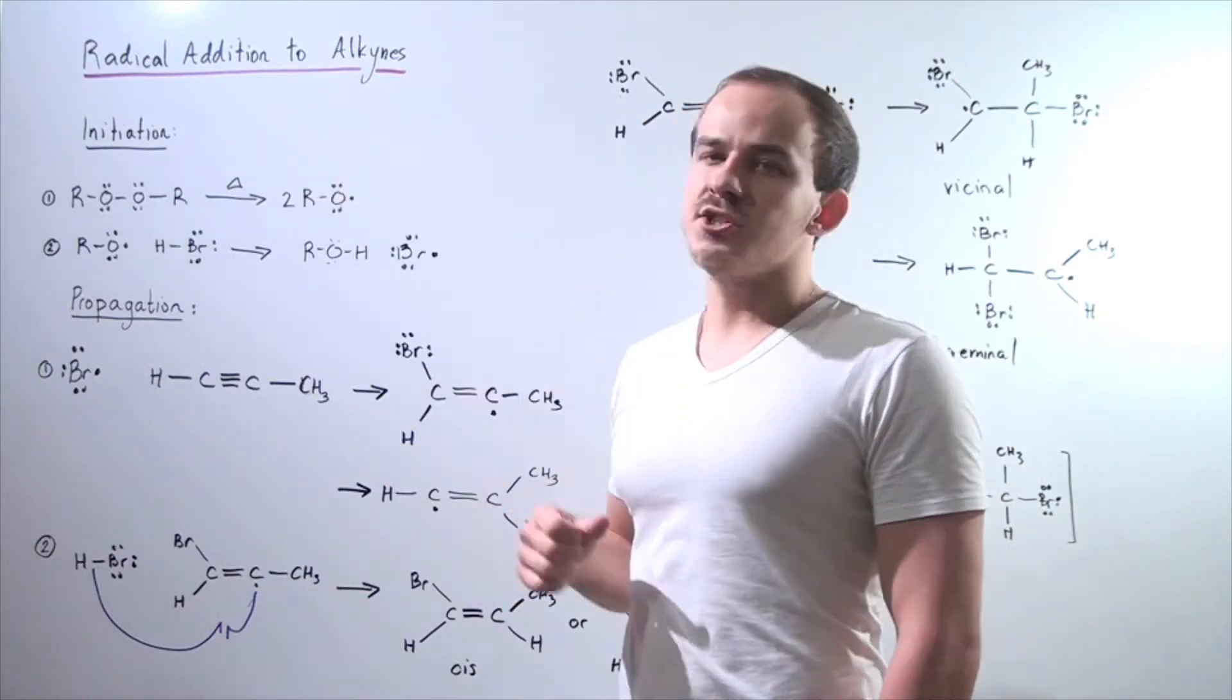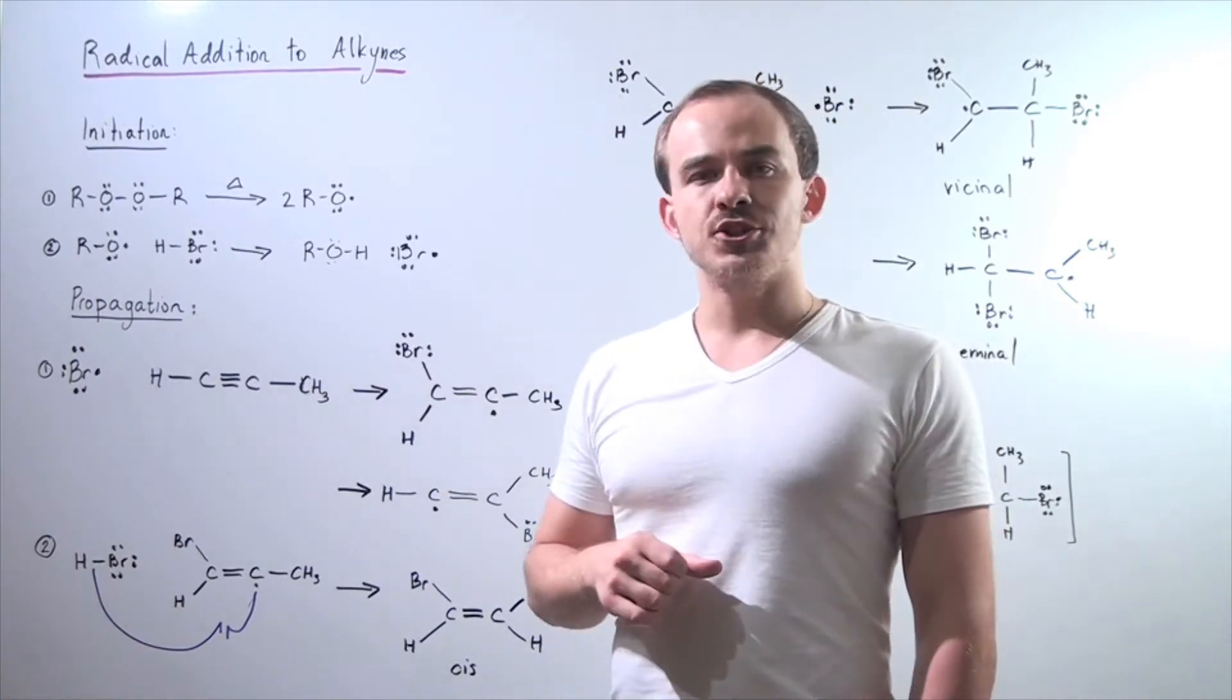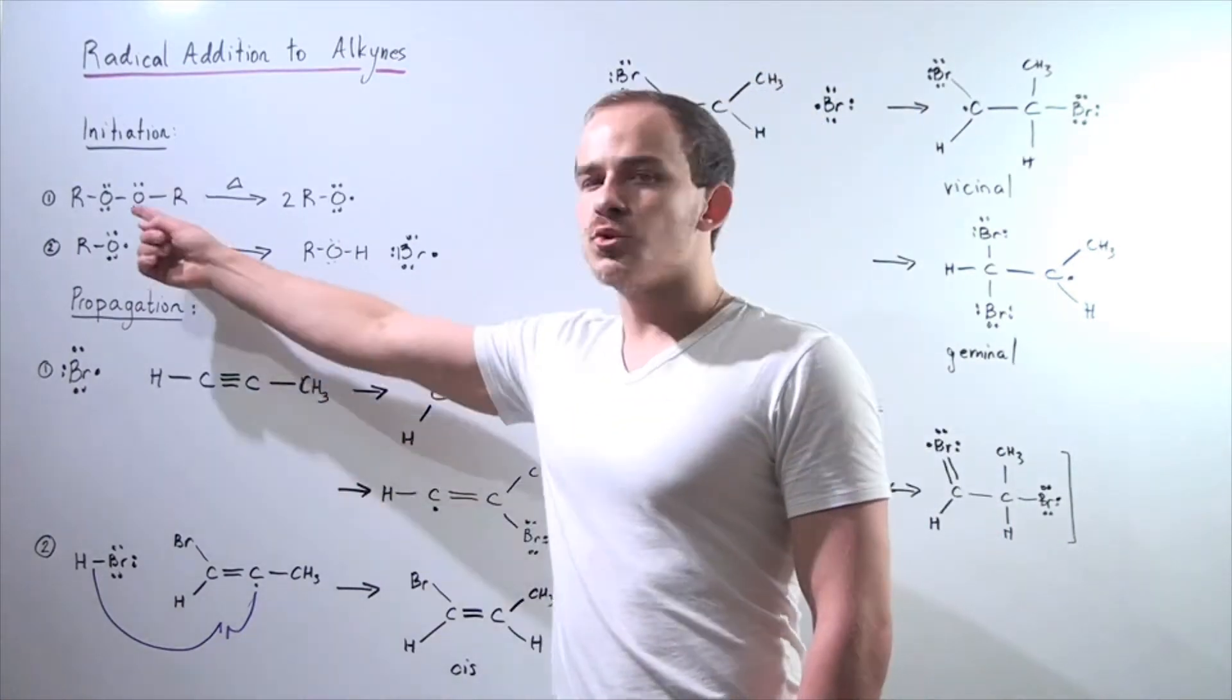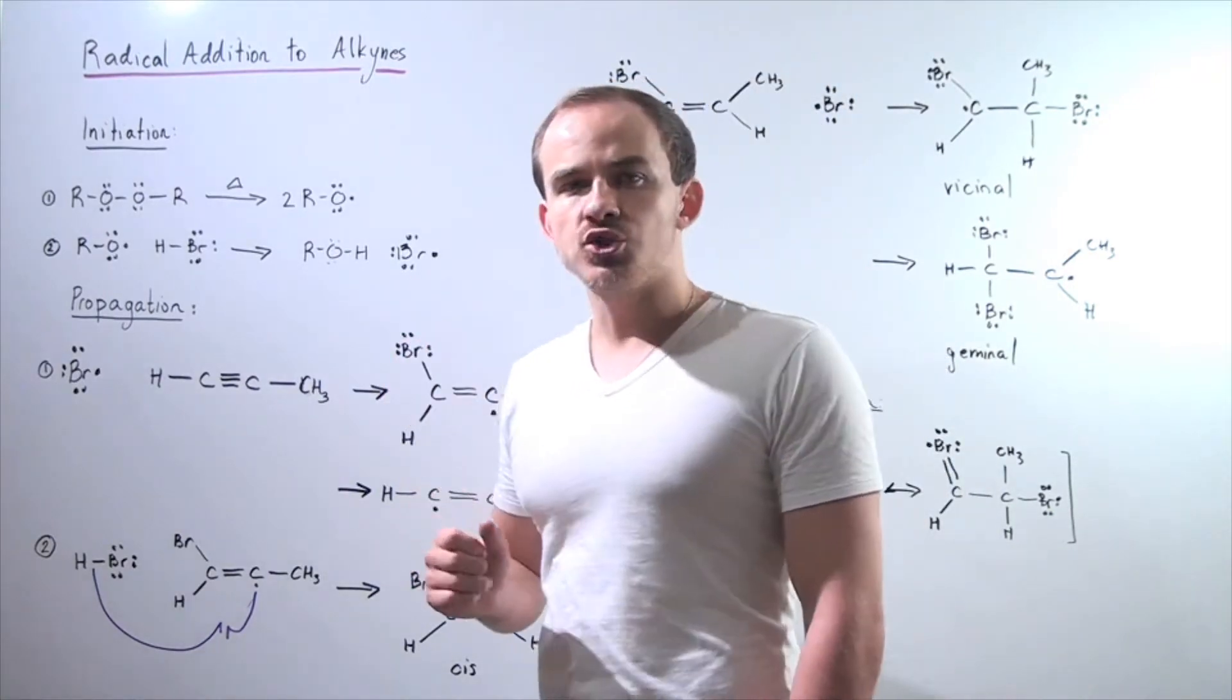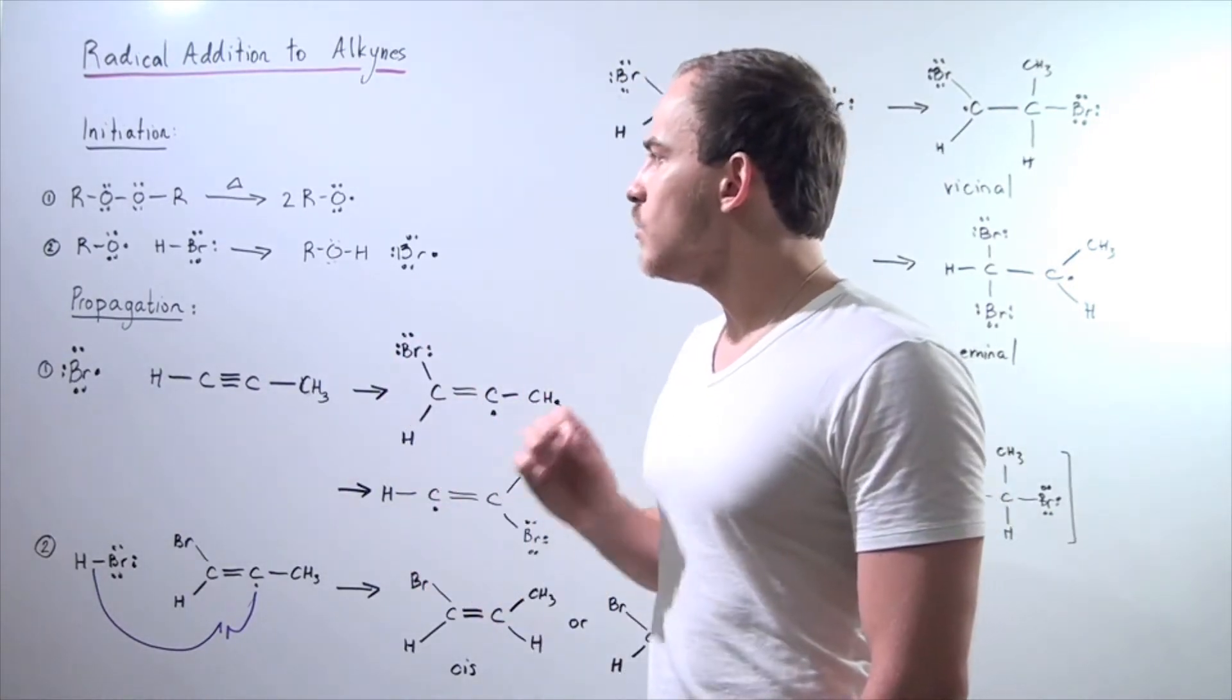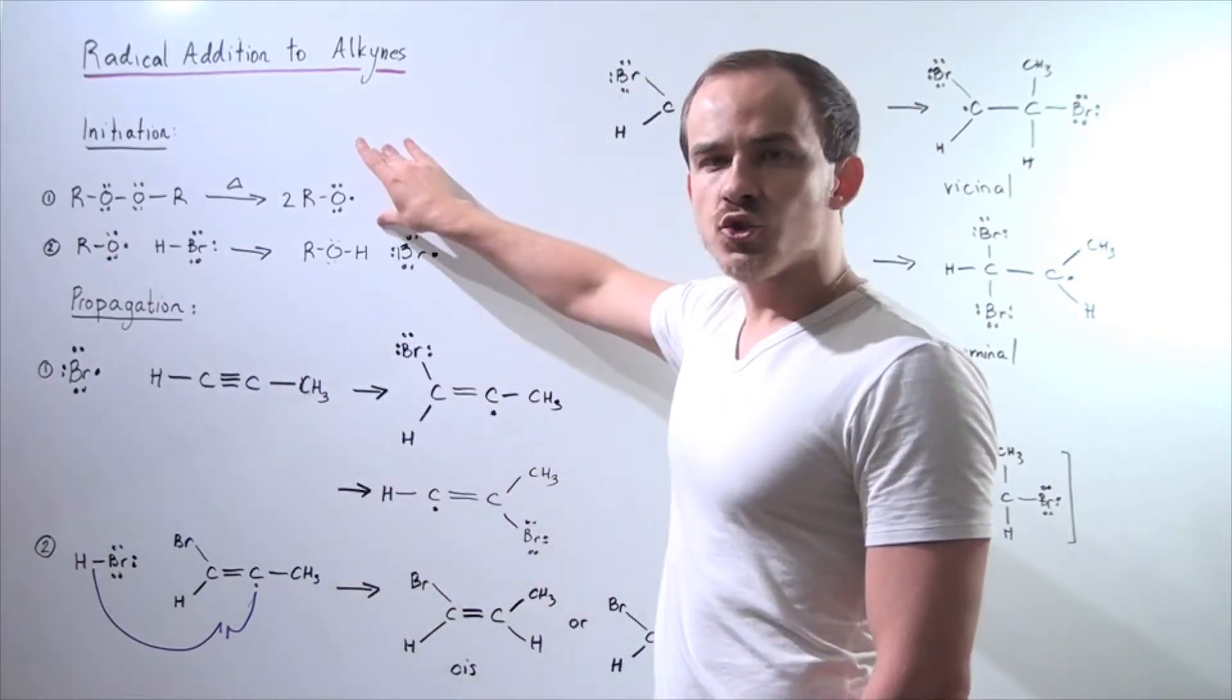Let's examine radical addition reactions to alkynes and begin with our initiation step. We have a peroxide and we add energy. This energy is used to cleave the relatively weak oxygen-oxygen bond, forming the following two radicals.